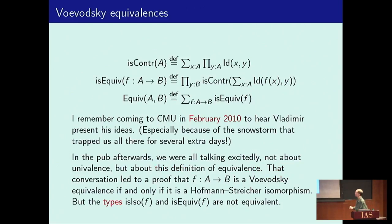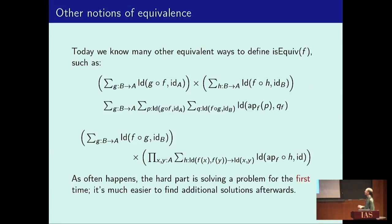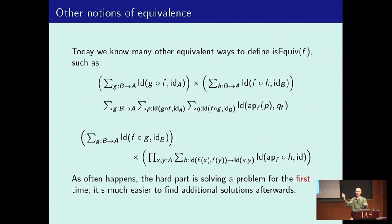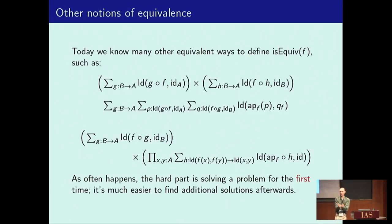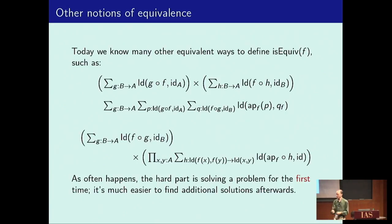This was Vladimir's definition of equivalence, which is the first correct one. Nowadays we know various other ways to do it which are also correct. One is where instead of having one map backwards with two homotopies exhibiting it as a left and right inverse, you have two maps backward — one a left inverse and the other a right inverse. Topologically, instead of having a loop with one point at the top, you now have two points, each connected to the base point by a path that you can just contract down. Another way is to add an extra higher homotopy, which is like filling in the circle with a disc, and you again get something contractible. The harder part was coming up with the first definition, which Vladimir did.